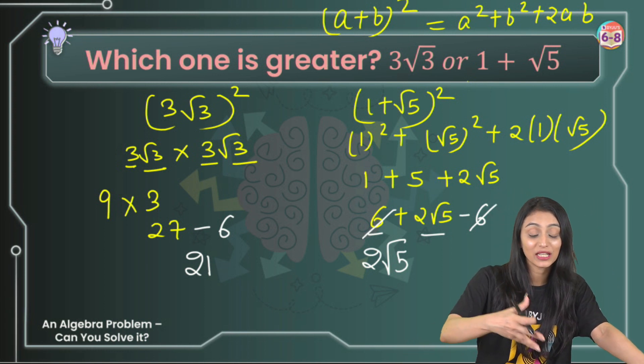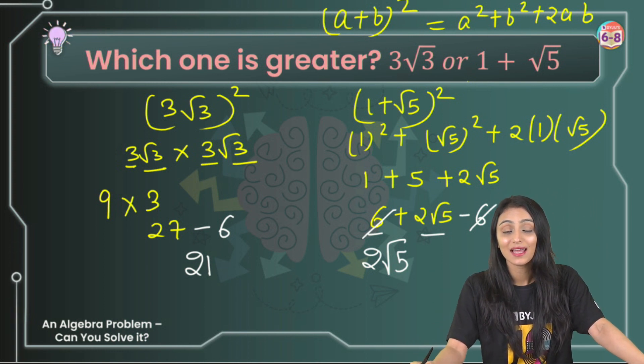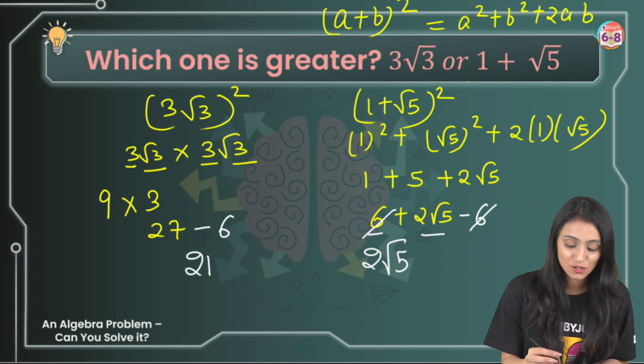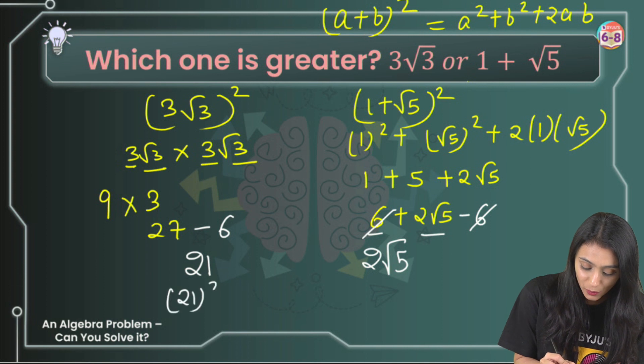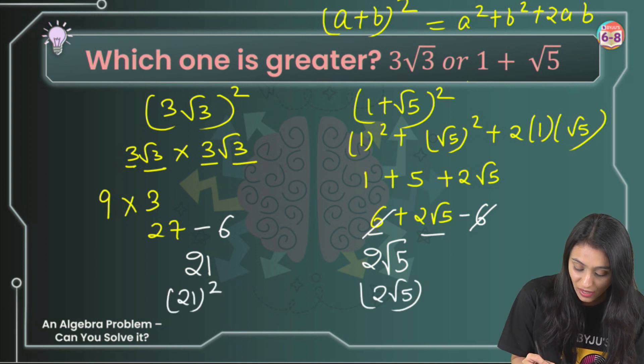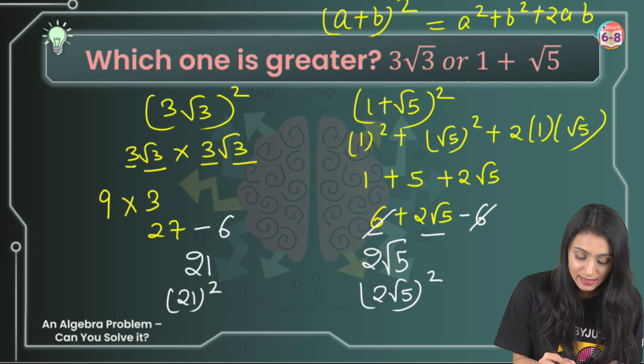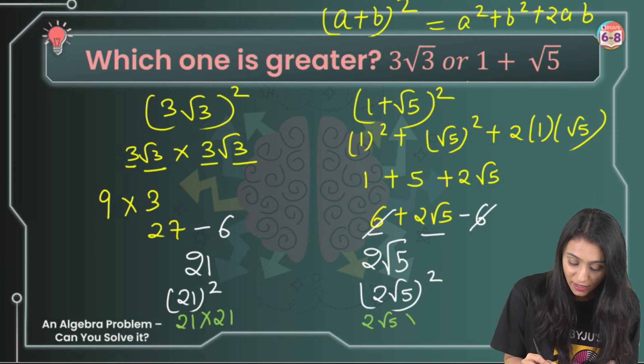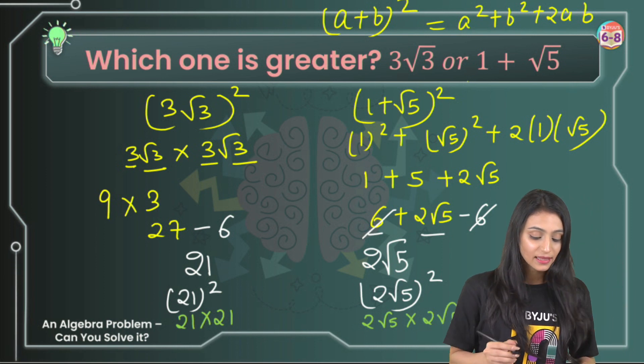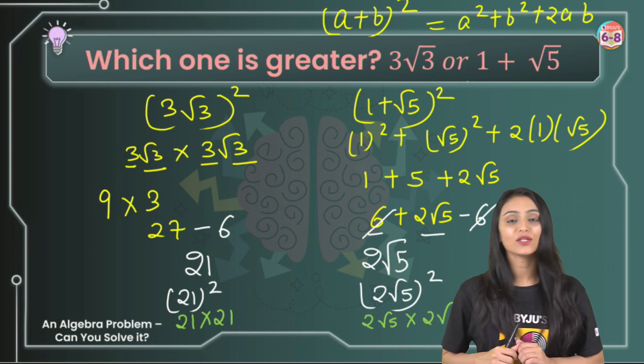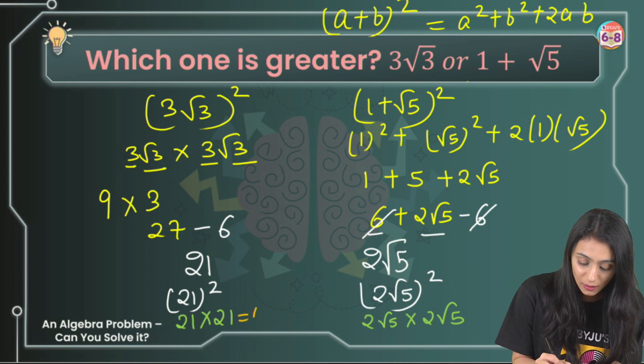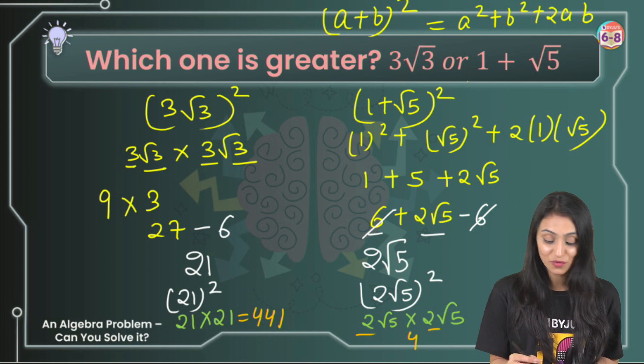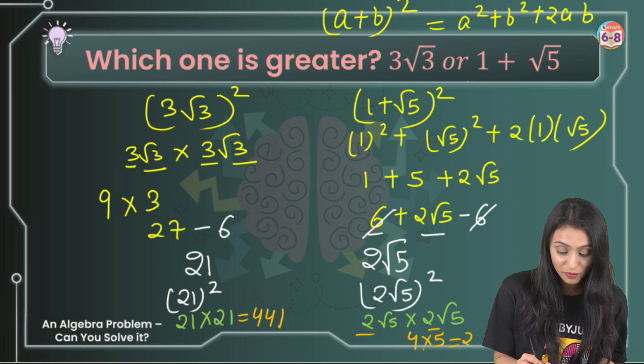Again, how do I compare 21 and 2√5? To remove the square root, I'll simply do squaring of both these numbers. We have 21² and (2√5)². This is 21×21 and this is 2√5×2√5. This is simply going to be 21×21, that's 441. Here 2×2 is 4 and √5×√5 gives you 5. So you have 20 here.